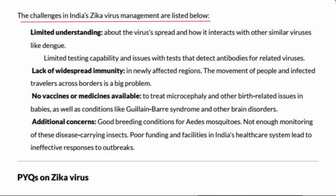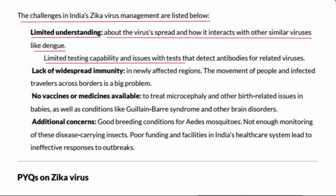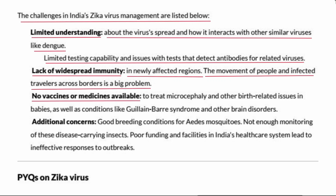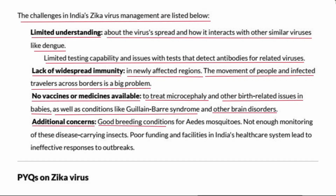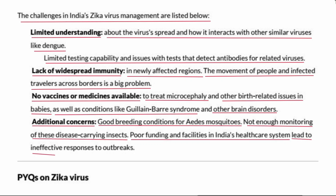Challenges in India's Zika virus management: Limited understanding about the virus spread and how it interacts with other similar viruses like dengue. Limited testing capability and issues with tests that detect antibodies for related viruses. Lack of widespread immunity in newly affected regions. The movement of people and infected travelers across borders is a big problem. No vaccines or medicines are available to treat microcephaly and other birth-related issues in babies, as well as conditions like Guillain-Barré syndrome and other brain disorders. Additional concerns include good breeding conditions for Aedes mosquitoes, insufficient monitoring of other disease-carrying insects, and poor funding and facilities in India's healthcare system leading to ineffective responses to outbreaks.